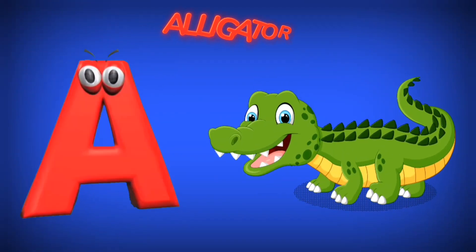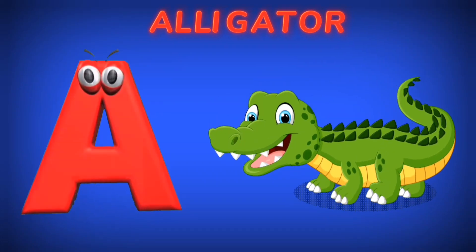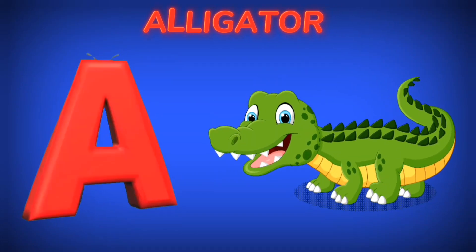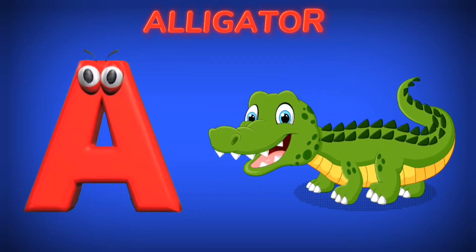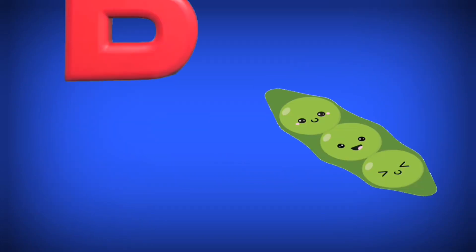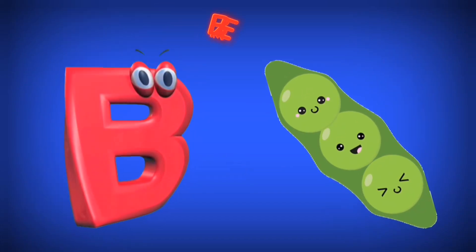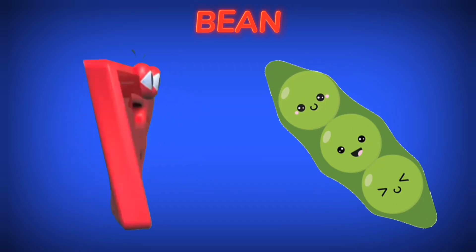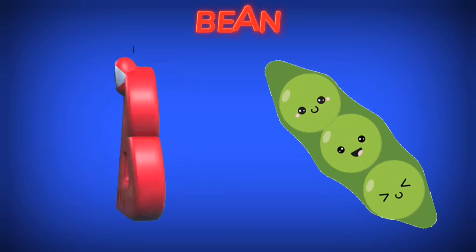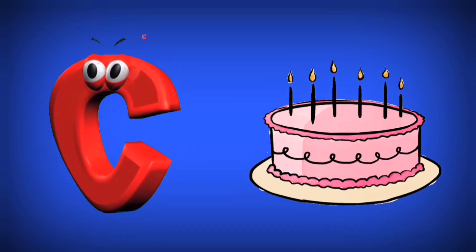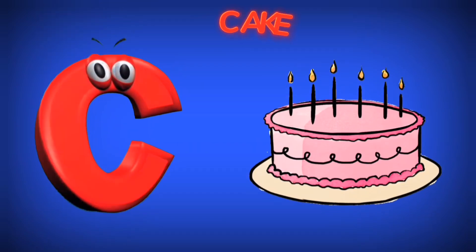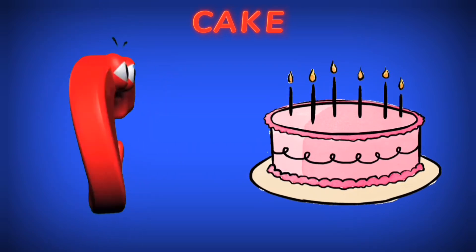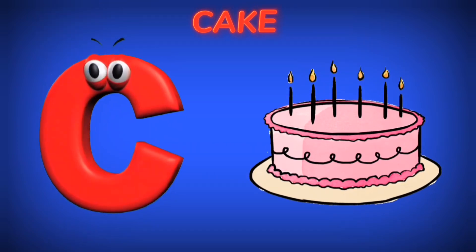A is for Alligator. A. Alligator. B is for Bean. B. Bean. C is for Cake. C. Cake.